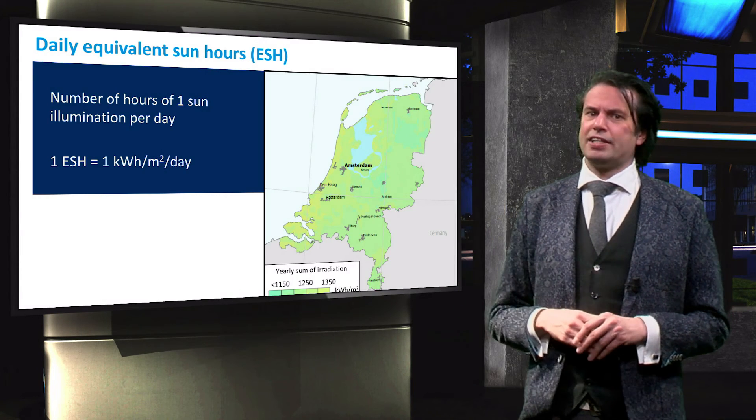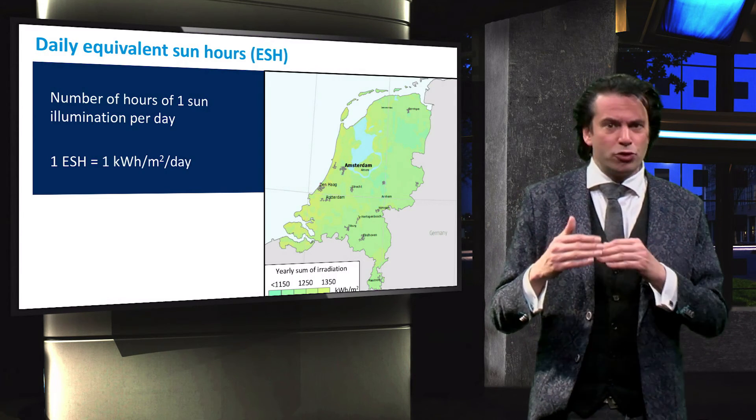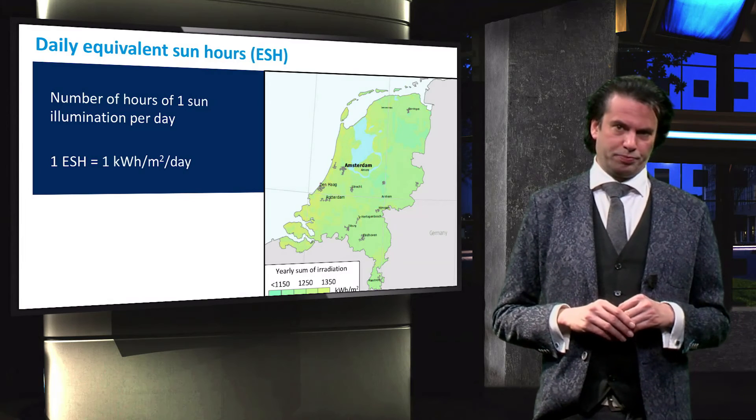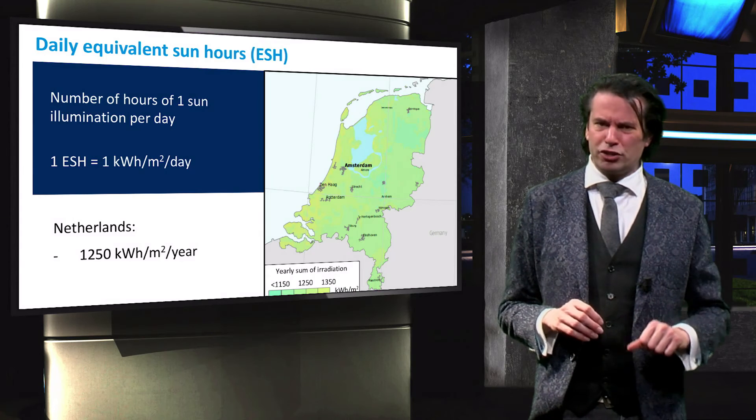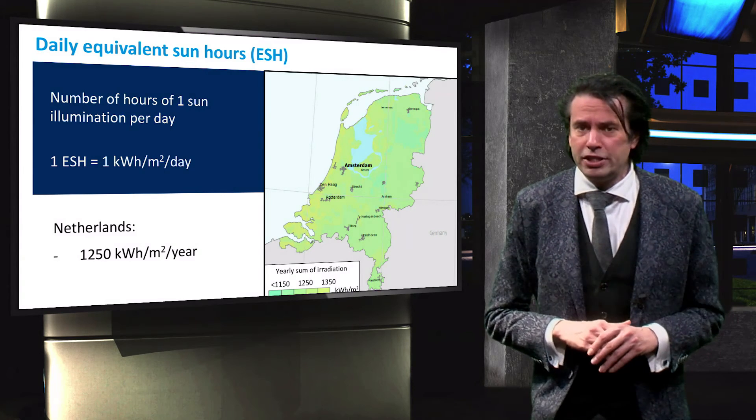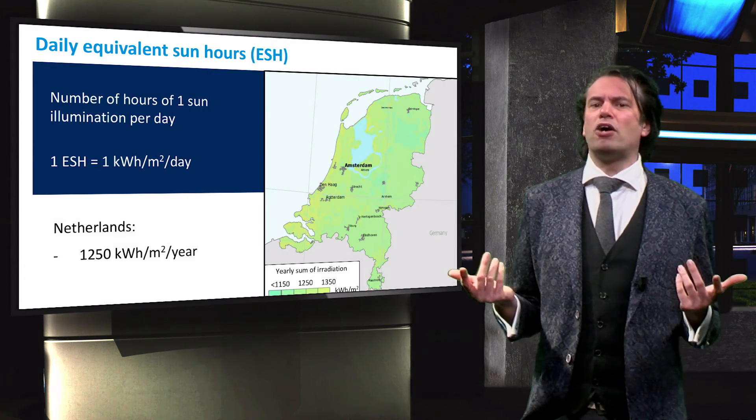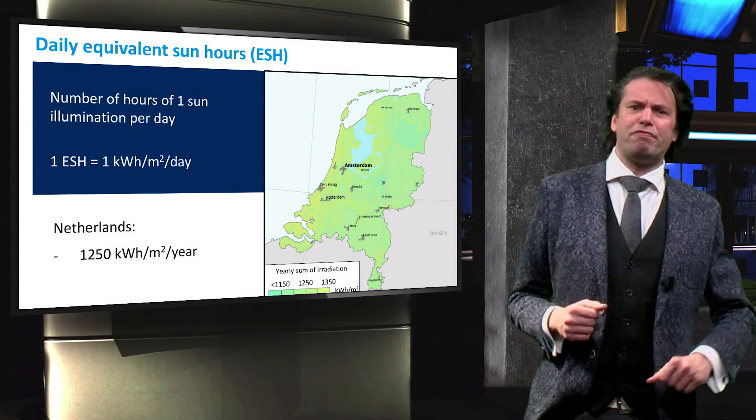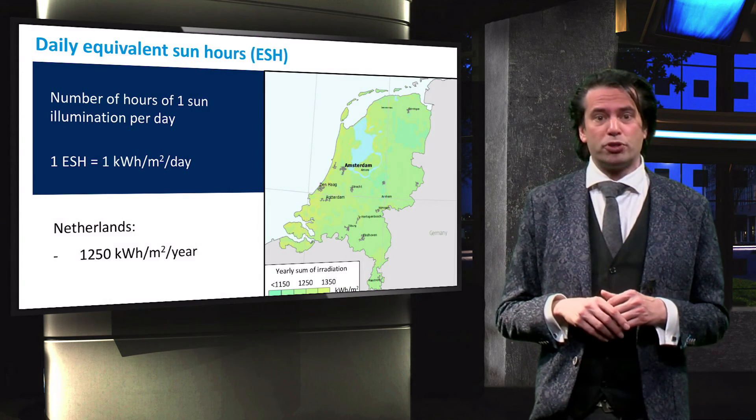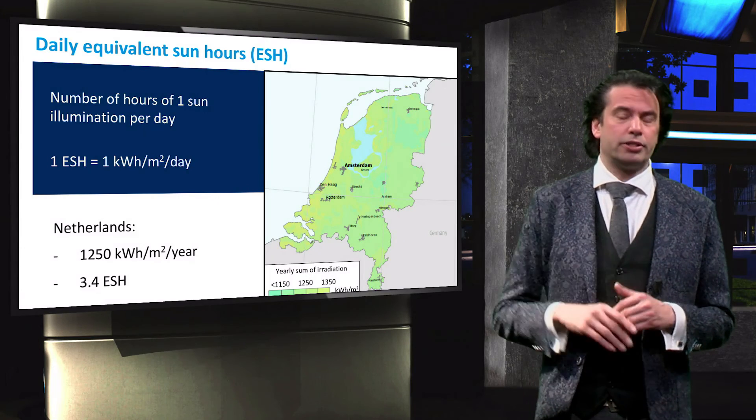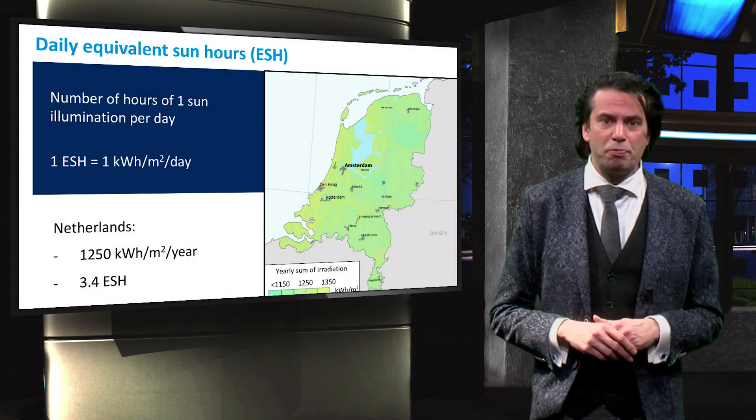If we look for instance at this map of the Netherlands, which shows the yearly sum of irradiation for panels with an optimal tilt angle, judging from the color distribution, we can assume an average yearly irradiation of about 1250 kilowatt-hours per square meter per year. Dividing this amount by the number of days in a year, we find that the Netherlands receives on average about 3.4 kilowatt-hours per square meter per day for optimal tilted panels, which means that it is about equivalent to 3.4 sun hours.